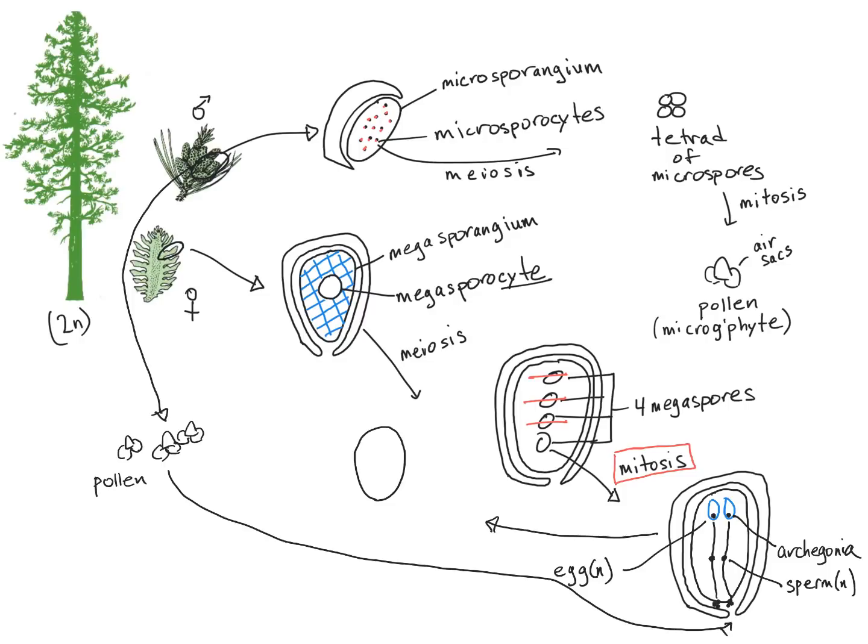So we have inside a seed, the young developing new sporophyte generation, that we're going to call the embryo, and it's diploid. On the outside of that, we have a protective layer, which helps the seed survive harsh conditions. That's called the seed coat. And then internally, we have the remains of the megagametophyte tissue. So this is all haploid tissue, and that contrasts sharply with what we're going to see in angiosperms. So that megagametophyte tissue is nutritive for the developing embryo and is haploid.